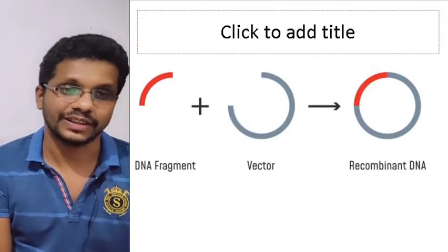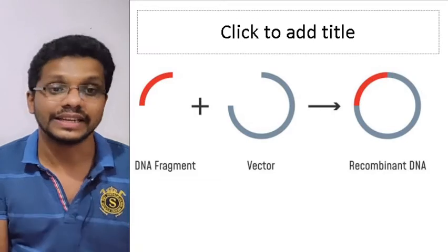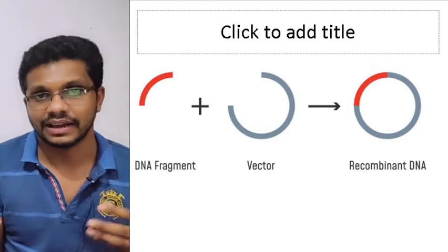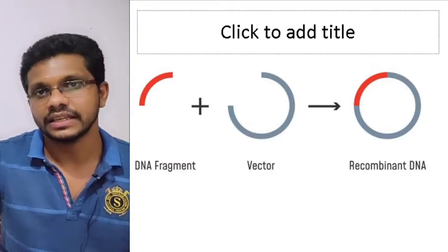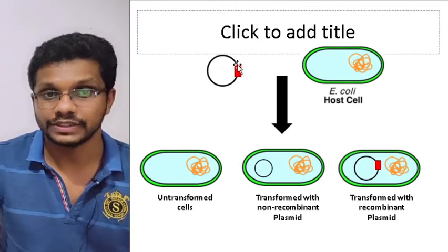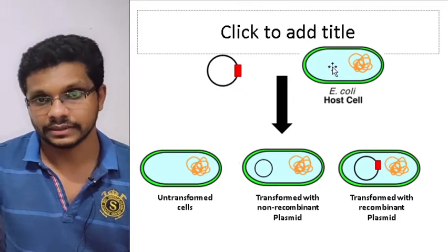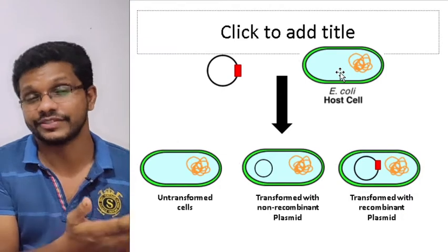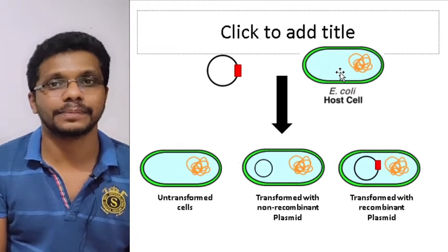What we do is: we cut the vector with a restriction endonuclease, and we also cut the DNA fragment with a restriction endonuclease. Then we mix both together — the vector and the foreign DNA — add DNA ligase so it will be ligated, and then go for transformation. The same thing is applicable for PBR322. This is the PBR322 with a foreign DNA — the red color indicates the foreign DNA — and we are transforming this into E. coli. The cutting of DNA, cutting of the vector, cutting of the foreign DNA, and the combination processes are not 100% complete.